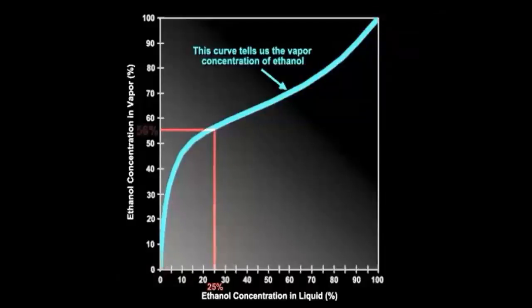If we find this point on the curve, we see that the concentration of ethanol in the vapor is 56%.